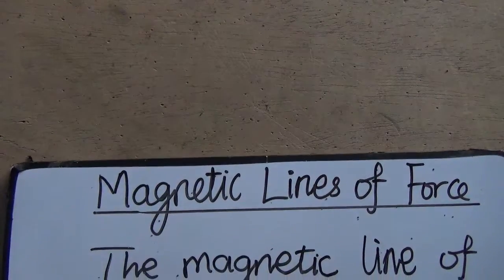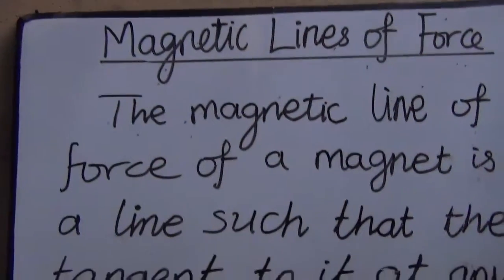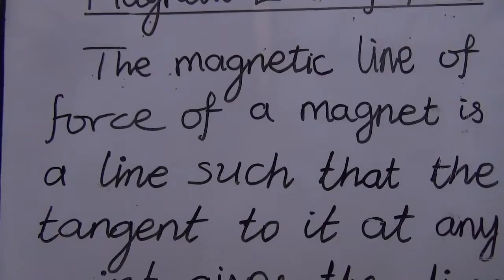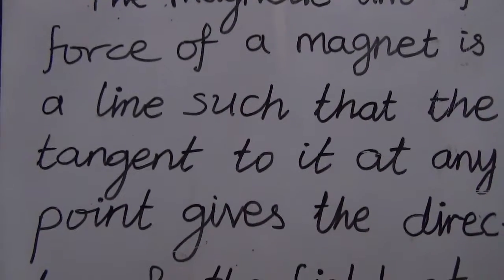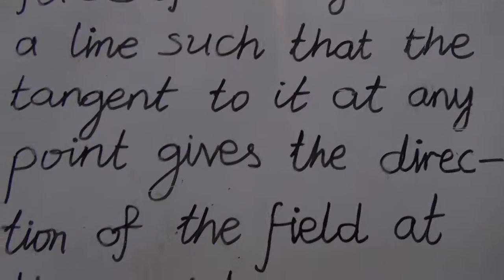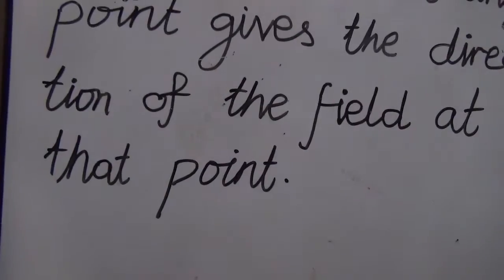Magnetic lines of force. They are imaginary lines. Magnetic line of force of a magnet is a line such that the tangent to it at any point gives the direction of the field at that point.